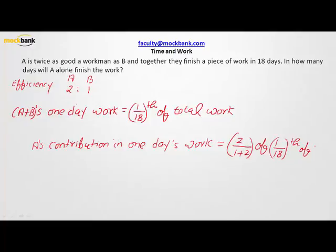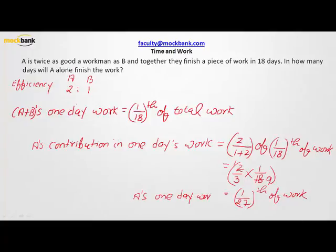This comes out as 2 over 3 times 1 over 18, that comes out as 1 over 27. So 1 over 27th of work is being done by A. This is A's 1 day work.